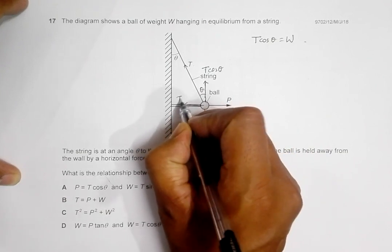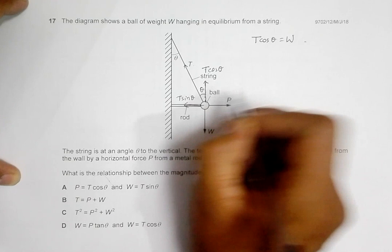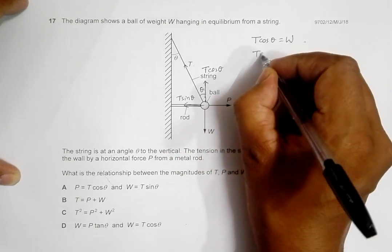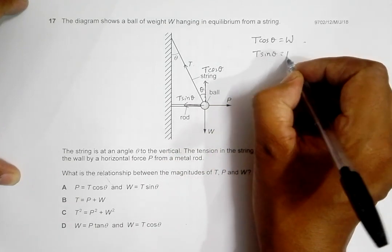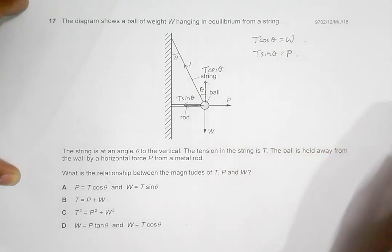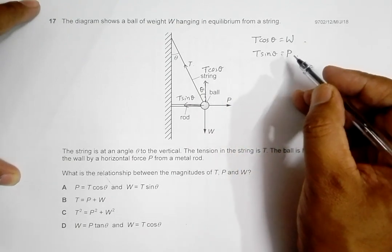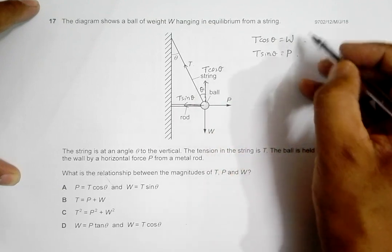Similarly, the component of this T to the left will be T sin theta. Since the system is in equilibrium, we must have T sin theta equal to this P.